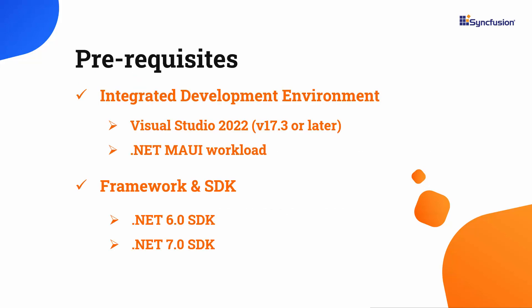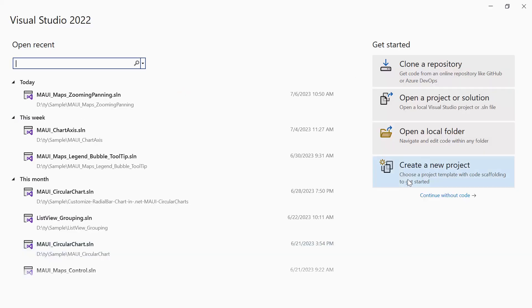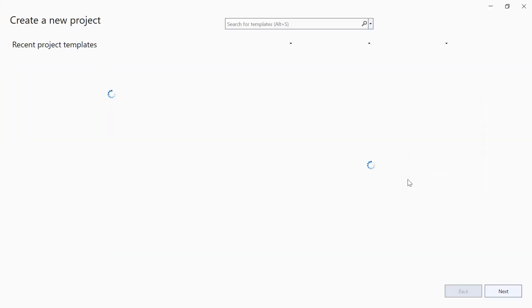Before you begin, make sure you have installed the latest version of Visual Studio 2022 with the required .NET MAUI workload. You should also have one of the .NET SDKs installed on your machine. Once you have installed the necessary tools, launch Visual Studio 2022 and click Create a New Project from the dashboard.